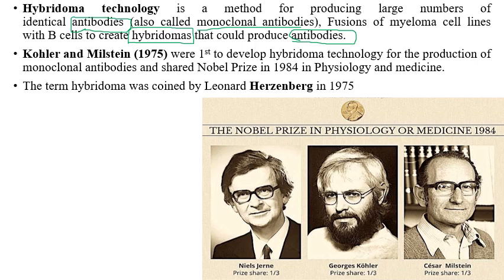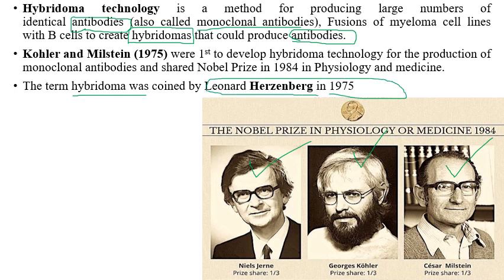Köhler, Milstein, and Jerne received the Nobel Prize in Physiology and Medicine for their work on hybridoma technology and the production of monoclonal antibodies. The term 'hybridoma' was first coined by Leonard Herzenberg in 1975.